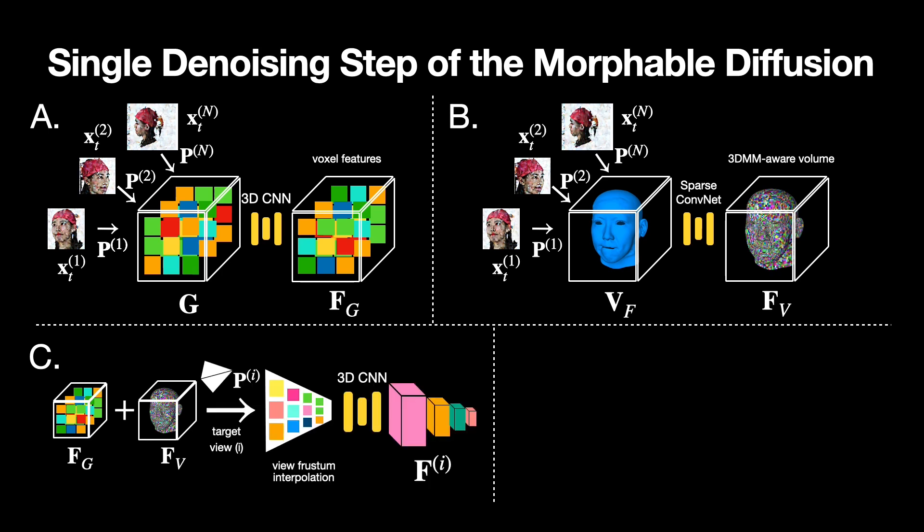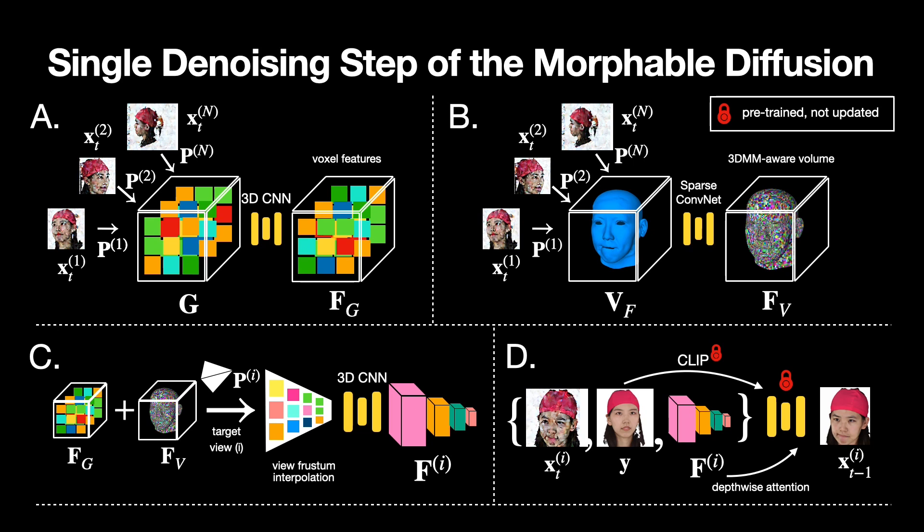Then, the resulting feature grids are blended via addition. The blended noise volume is further interpolated to the frustum of a target view that we wish to synthesize. Lastly, the noisy target image, the input image, and the target feature frustum are processed by a pre-trained 2D U-Net to predict the denoised image at the next iteration.